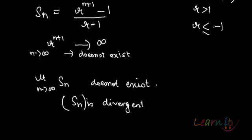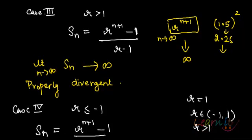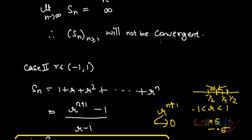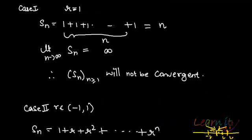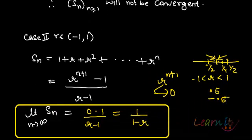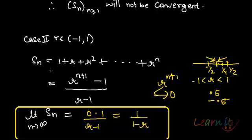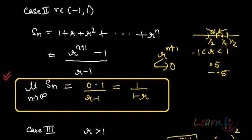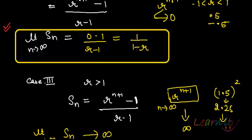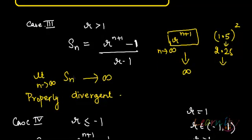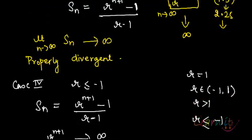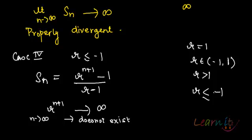So where is Sn convergent? Sn is not convergent when r equals 1. It is convergent in Case 2, where r lies strictly between minus 1 and 1 — that is, r is some fraction. When r is greater than 1 or when r is less than or equal to minus 1, the limit will not exist and Sn is divergent.